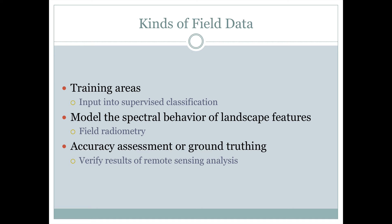The third way in which we need field data for remote sensing analysis, especially image classification, is for accuracy assessment or ground truthing. What we typically do is randomly sample an area and then verify that at those random points, what we think from our image classification is on the ground is actually on the ground, or whether it's something else.